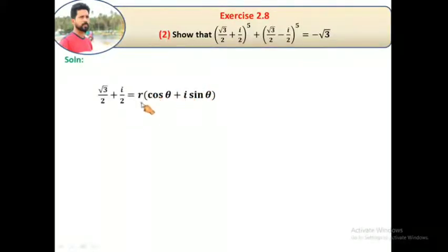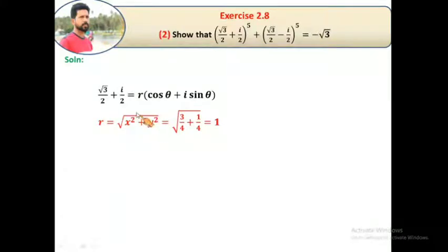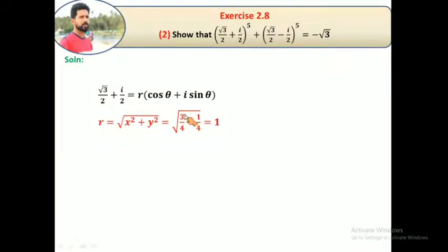That is r(cos θ + i sin θ). So √3/2 + i/2 equals r(cos θ + i sin θ). Next step, find out modulus. Modulus is square root of square of real part plus square of imaginary part. Real part is √3/2, square gives 3/4. Plus imaginary part 1/2, square gives 1/4. So denominator is same, add numerator: 3 plus 1 is 4, so 4/4 equals 1. Root 1 is 1.